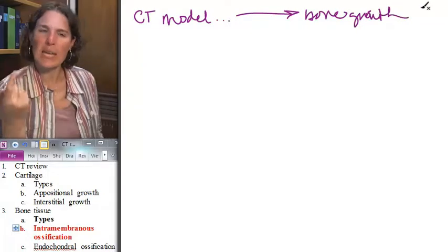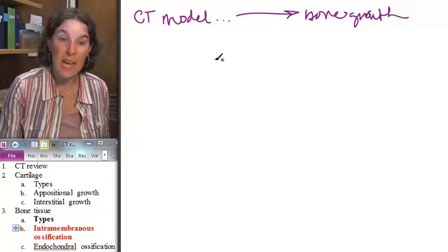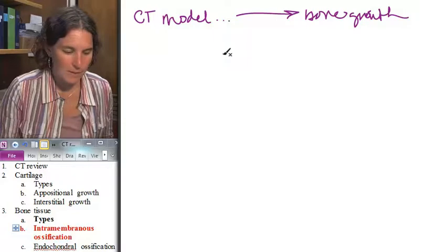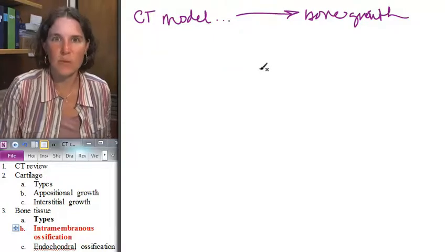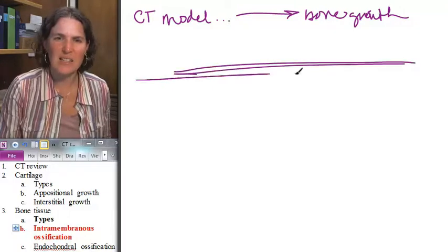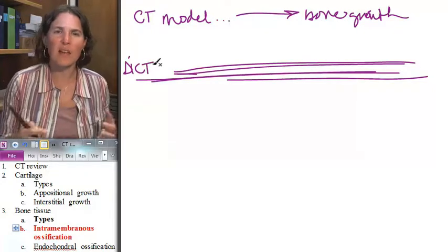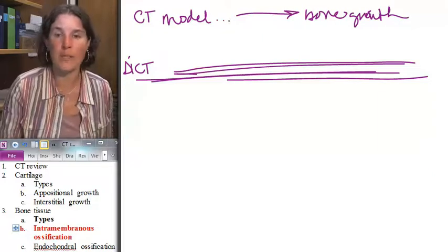So in the case of intramembranous ossification, you actually have to have dense irregular connective tissue. So you have like this dense irregular connective tissue that is the starting place for the whole thing to happen.